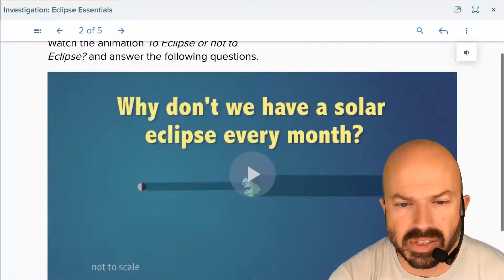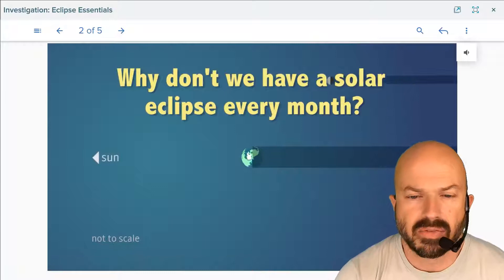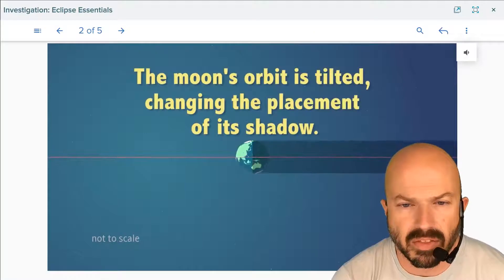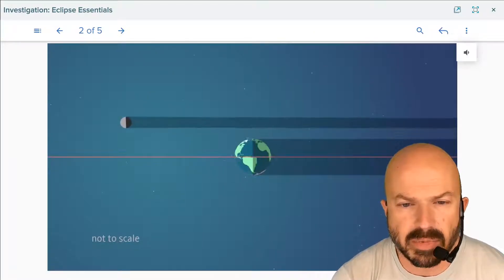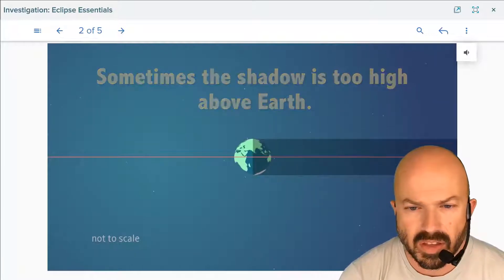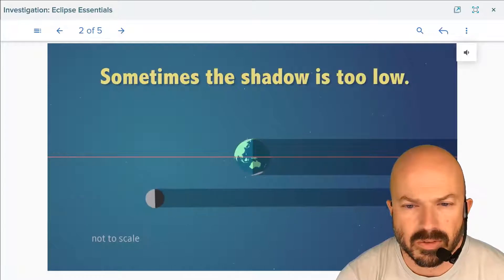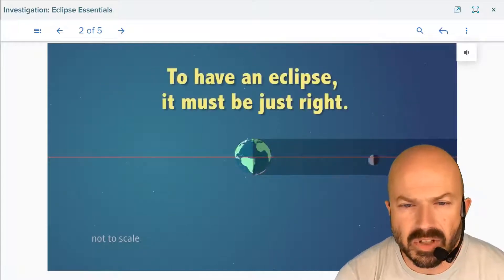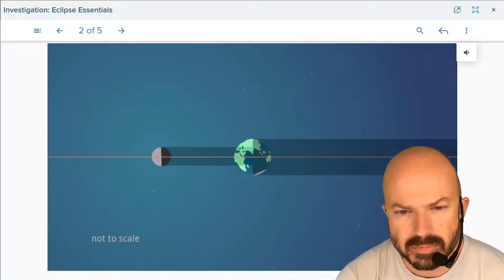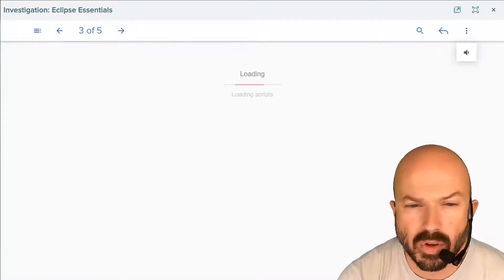Why don't we have a solar eclipse every month? Based on this view, you would assume that there would be an eclipse every month. But if we look at it from a different angle, we see that sometimes the shadow is too high above the earth, and sometimes the shadow is too low. To have an eclipse, it has to be just right, like Goldilocks and the three eclipses.